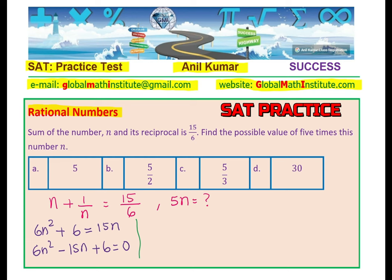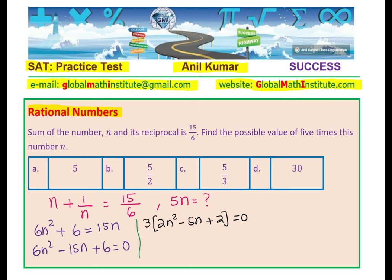As you can see, 3 is common in the equation, so let's take 3 as common. We get 2n squared minus 5n plus 2 equals 0. Now we need to factor 2n squared minus 5n plus 2 using the product and sum strategy. We are looking for two numbers whose product is 2 times 2 equals 4, and whose sum is minus 5. Clearly the numbers are minus 4 and minus 1 — when you add them you get minus 5.